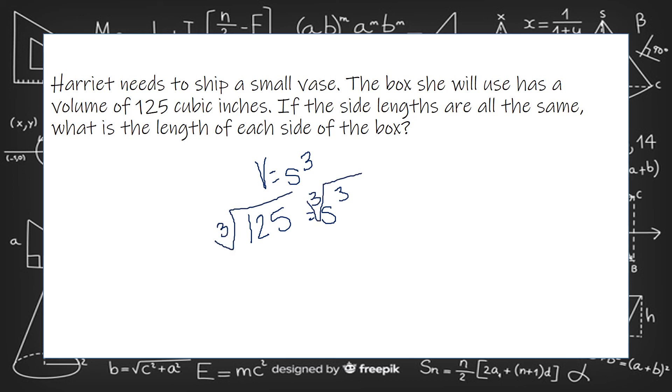So we're going to take the cube root of that volume to get rid of the cube. So the cube root of 125 is 5. So each side length is 5 inches.